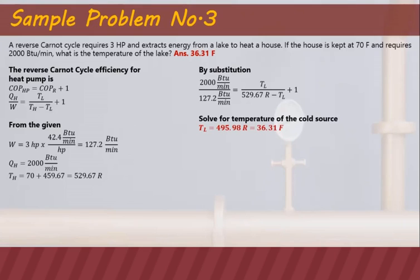Subtracting 459.67 converts TL to degrees Fahrenheit, giving 36.31 degrees Fahrenheit. So this reverse Carnot cycle requires 3 horsepower to extract energy from the lake to heat the house at 70 degrees Fahrenheit, requiring 2,000 BTU per minute. For this to happen, the temperature of the lake must be 36.31 degrees Fahrenheit.